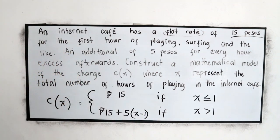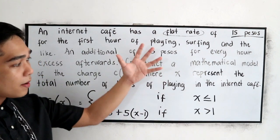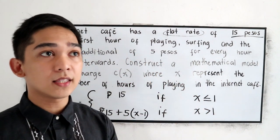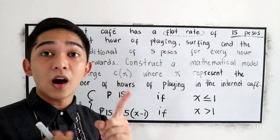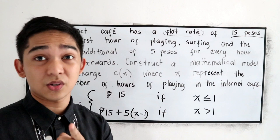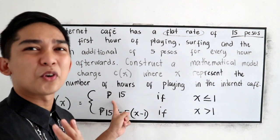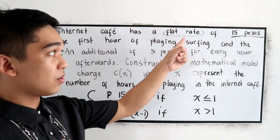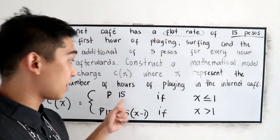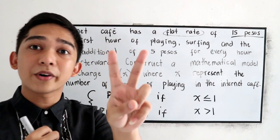Pwede natin syang i-check. So ito na nga yung mathematical model. Kapag nabasa natin ito, alam natin na kapag naka 1 hour ako, ang babayaran ko ay 15 pesos. Unless pag 45 minutes lang, flat rate yun na 15 pesos pa din yung babayaran ko, kaya less than. Pero pag naka 2 hours ako.